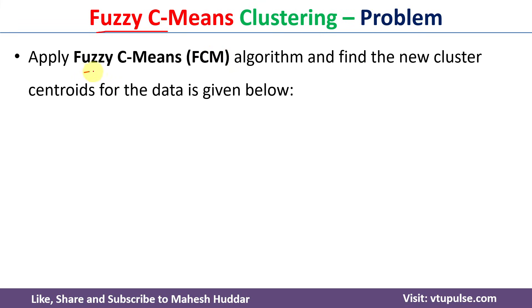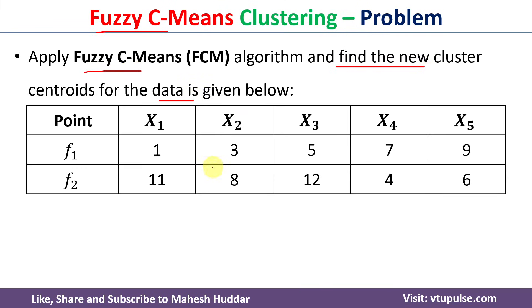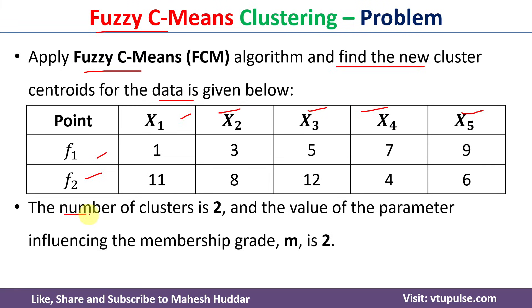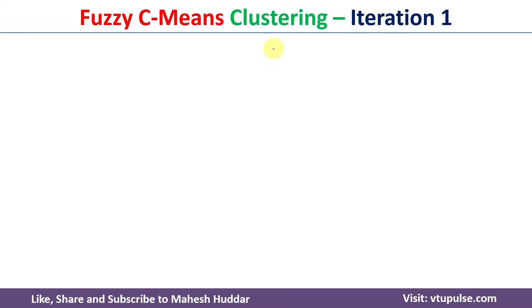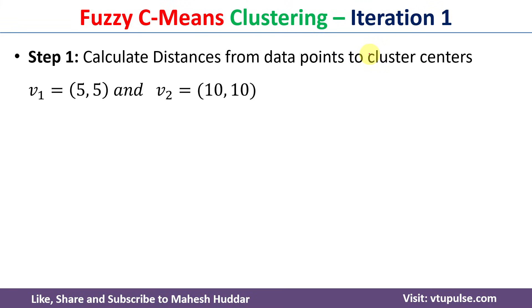To understand Fuzzy C-Means clustering we will take one problem where we need to apply the algorithm and find the new cluster centroids. The given data has two features f1 and f2 with five data points x1 through x5. The number of clusters is 2, the fuzziness parameter m is equal to 2, and the initial cluster centers are v1=(5,5) and v2=(10,10).